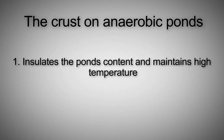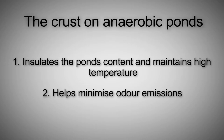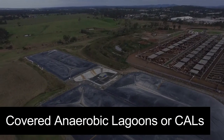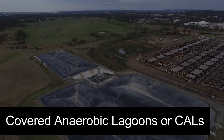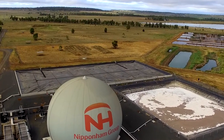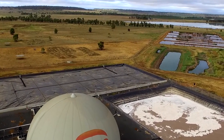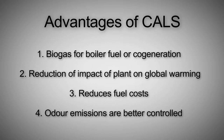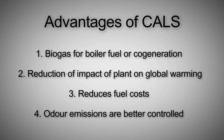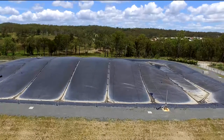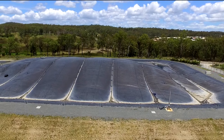This natural crust is considered to play a positive role for the pond in that it insulates the pond contents and helps maintain the pond at high temperatures during cold winter months, helps minimise odour emissions off the pond and minimises oxygen entry into the pond through the water surface. Over the last decade, anaerobic ponds have been designed with a synthetic geomembrane, which seals the pond from the atmosphere and allows the capture of the biogas. The main advantage of covered anaerobic lagoon systems is that while the cover makes little difference to the treatment performance of the pond, biogas can be captured either for flaring or for other uses such as cogeneration or boiler fuel. This reduces the meat processing plant's impact on global warming, reduces fuel costs and odour emissions are better controlled. The downside is their greater cost, usually about double that of naturally crusted ponds.